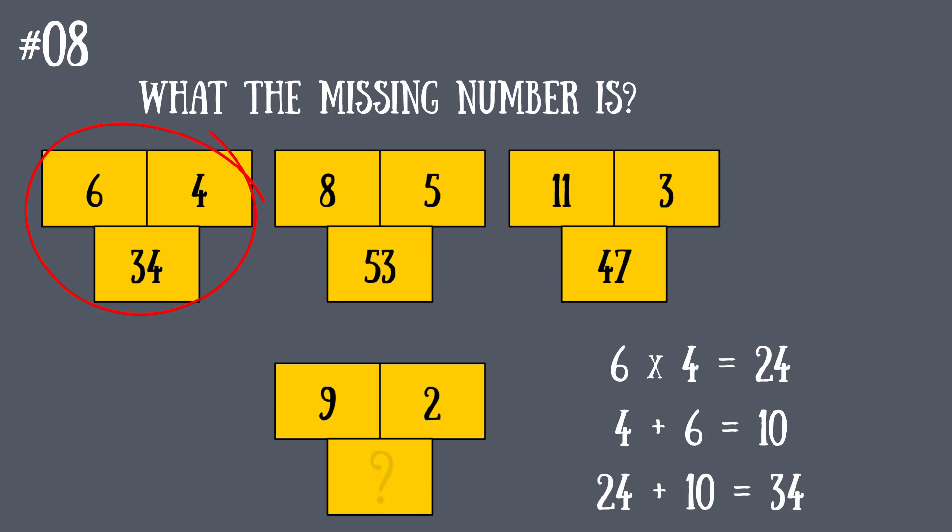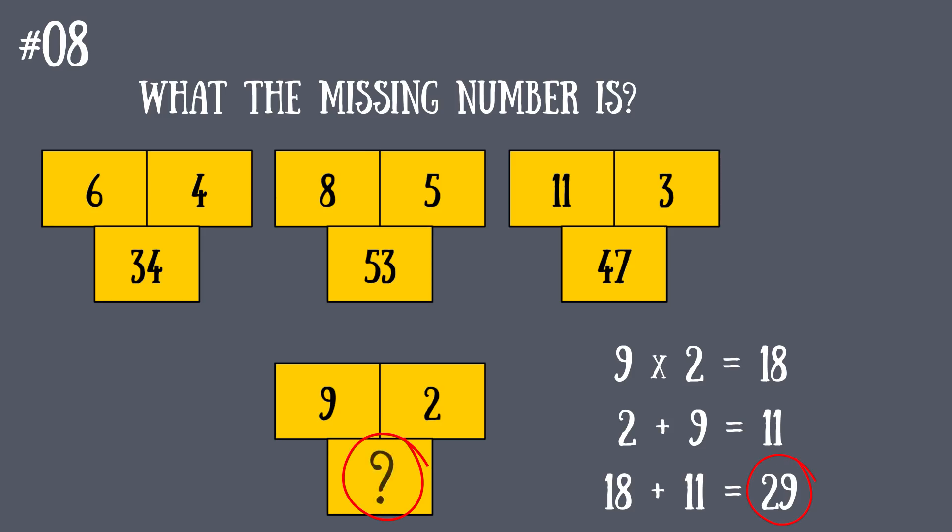Of course, this works for each block. So our number is 9 multiplied by 2, plus 2 added to 9. That's 18 plus 11, which is 29. Props to you if you found this solution, but we're moving along to your next challenge.